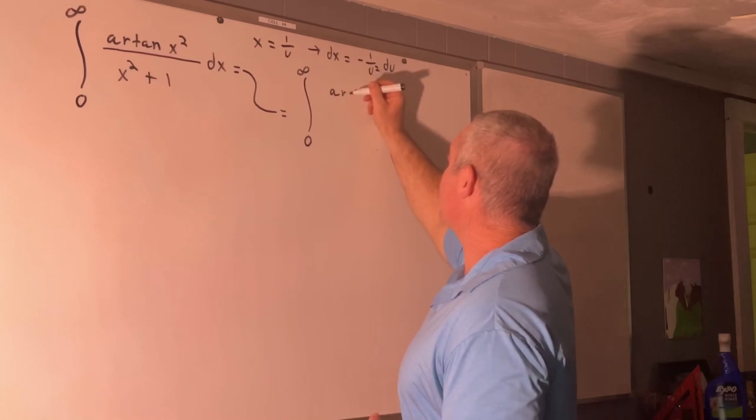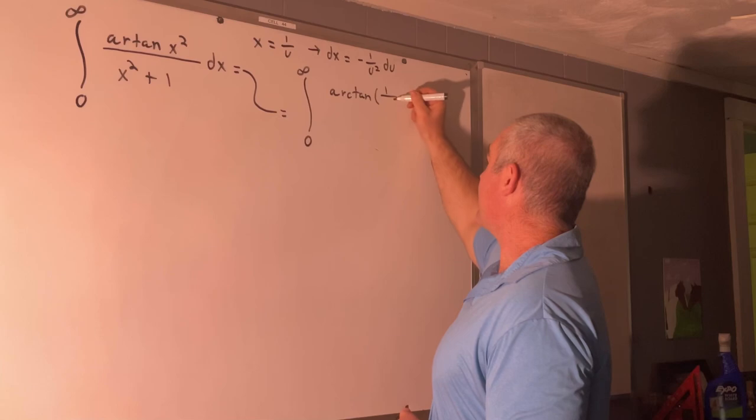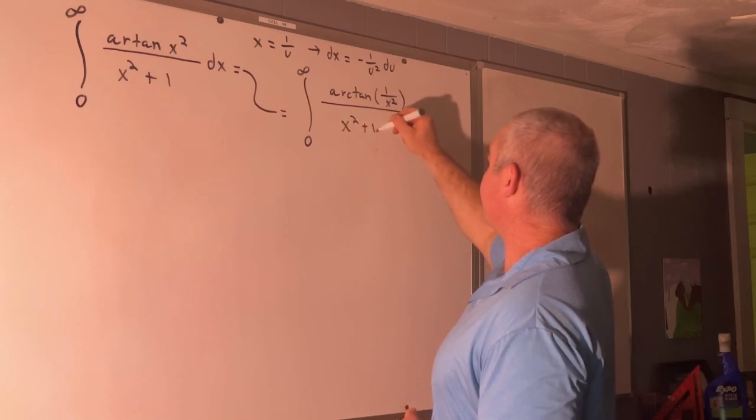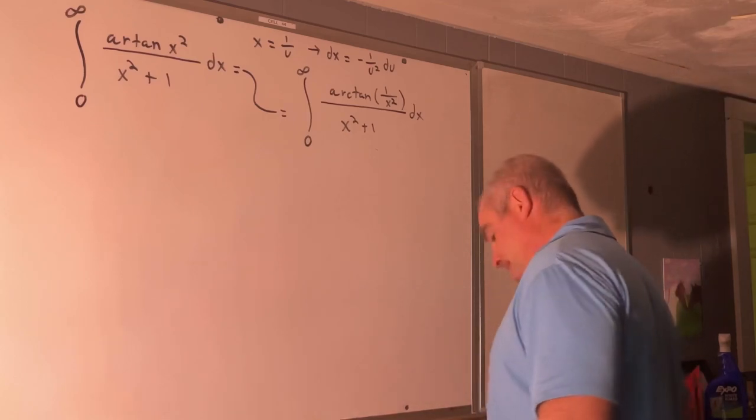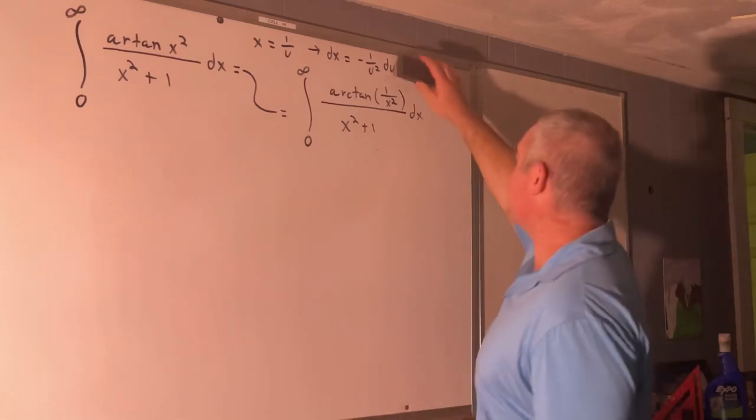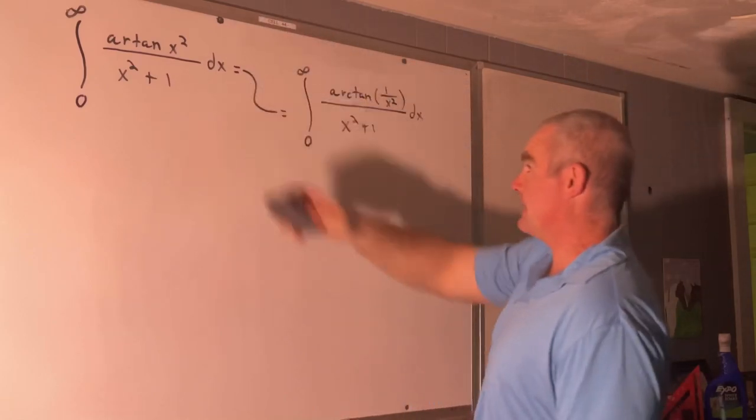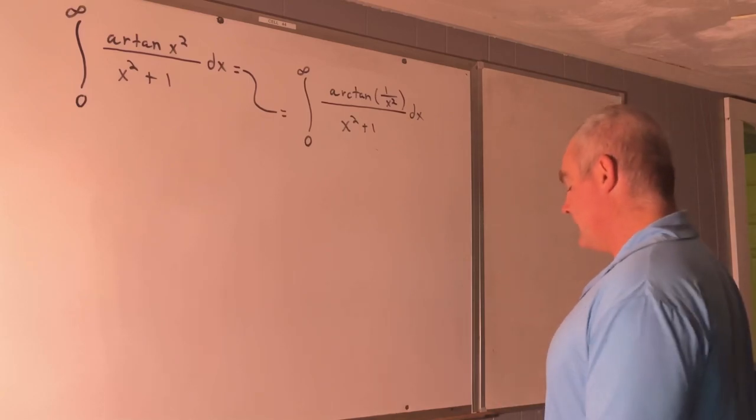That's going to be arc tangent of 1 over x squared over x squared plus 1 dx. And then I'll just go ahead and erase that substitution. So really all I did was just bring x to 1 over x, and this is what you get. All right.